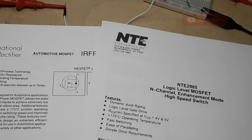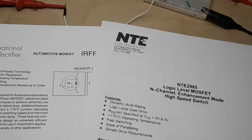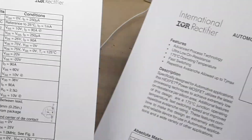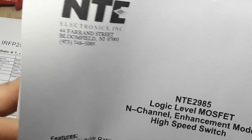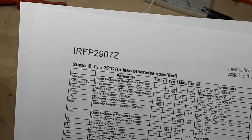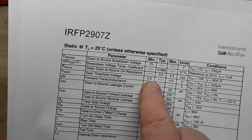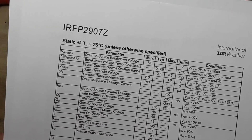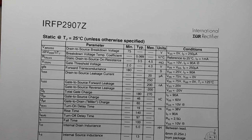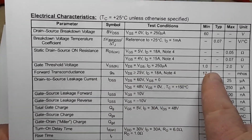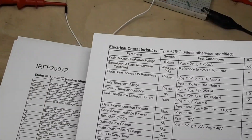A logic level MOSFET is designed to be turned on fully — that's the key word, fully — by the logic level zero to five volts of a microprocessor like an Arduino. The key thing to look at on the spec sheets is the threshold voltage, the VGS, or gate threshold voltage. For the standard MOSFET IRFP 2907Z, the gate threshold voltage is between two and four volts. For the logic level MOSFET, it's between one and two volts.